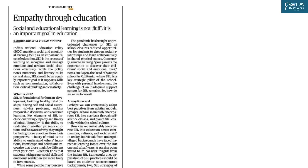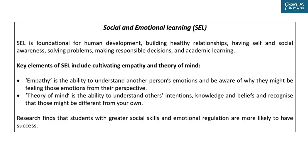This article is from page number seven of today's newspaper: 'Empathy Through Education.' The article basically focuses on social and emotional learning, which has been an important highlight of the New Education Policy of 2020. Social and emotional learning basically means that a person has to be aware and has the ability to manage emotion so that he or she can effectively navigate social situations. It is said to inculcate collaboration, cooperation, effective communication, creativity, and innovation in people, and is considered foundational for human development, making us intelligent social beings.